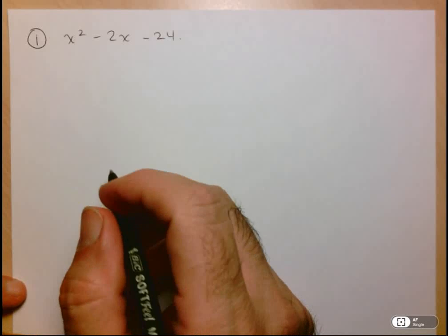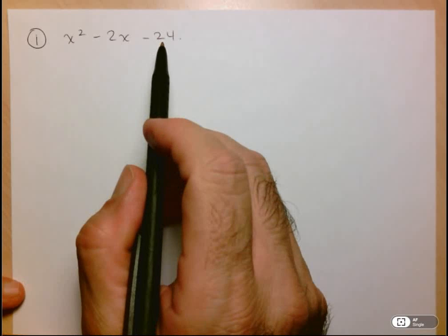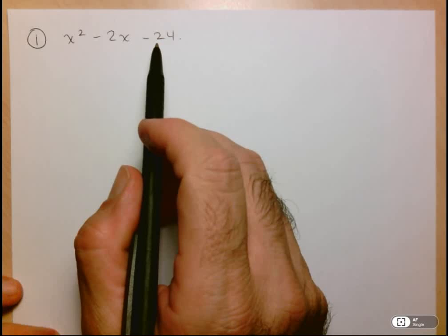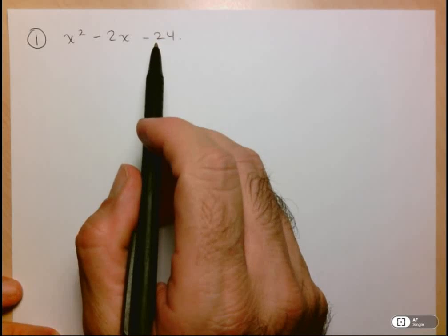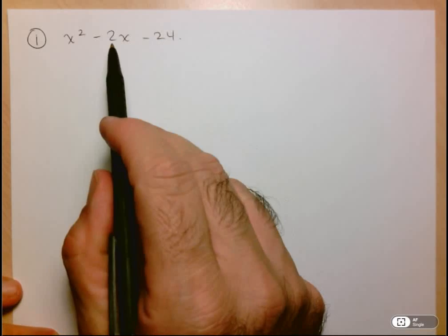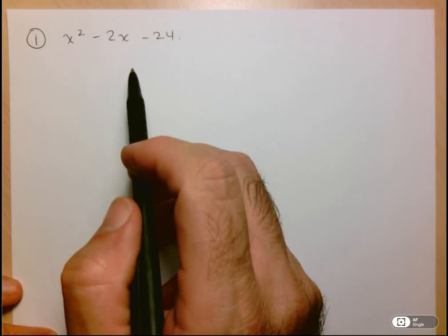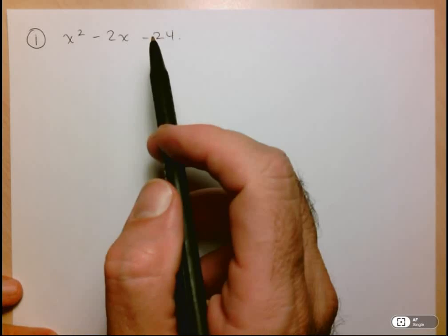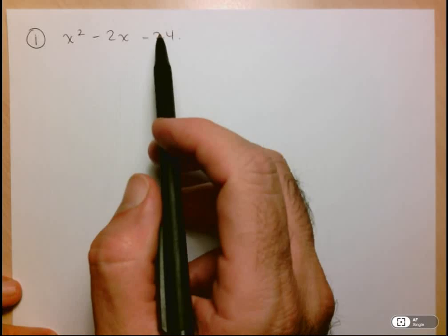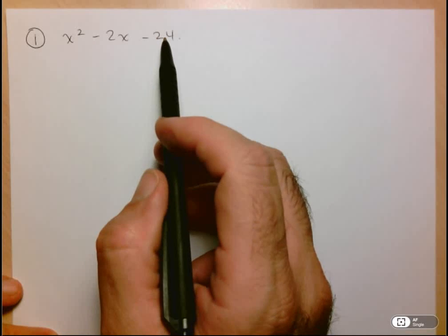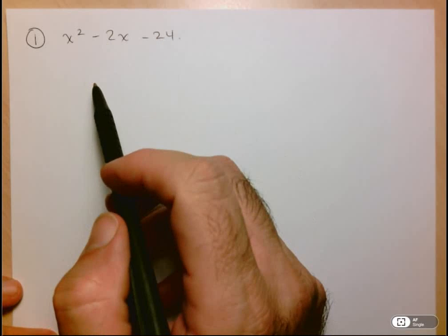So the trick to these is to focus in on the constant term. What you're looking for is two numbers that multiply to negative 24 and add up to negative 2. The idea is to just go through the factors of 24, or maybe you can see it right away. In this case, we consider 6 and 4, which allows us to get to negative 2.